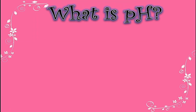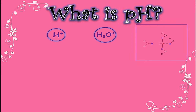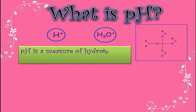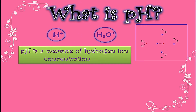First of all I'll tell you what is pH. pH is actually the measure of hydrogen ion concentration or hydronium ion concentration in any solution. 'p' stands for potential and 'H' stands for hydrogen ion. So the basic definition of pH is potential of hydrogen ion. These two ions form during ionization of any acid, so pH measures the presence of either hydrogen ion or hydronium ion.